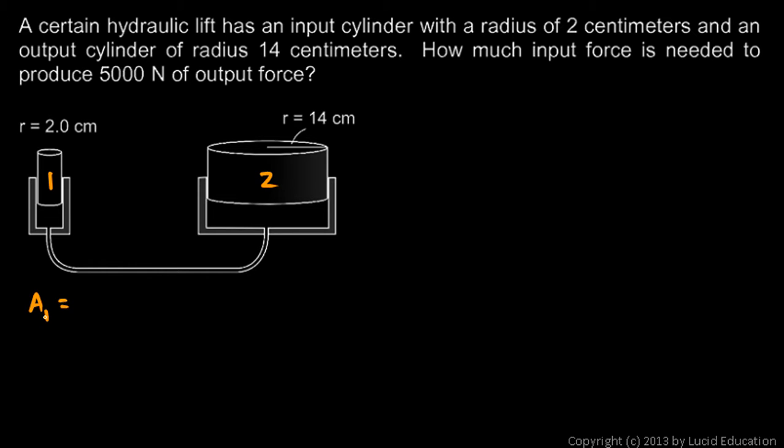We'll call this cylinder 1 and this one cylinder 2. So the area for cylinder 1, we'll call that A1, that will be pi r squared. The radius here is 2 centimeters, so this will be pi times 2 squared. That comes out to 12.57 square centimeters.